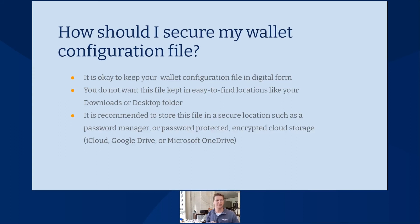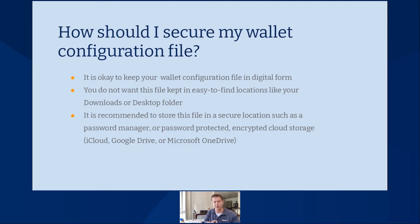Now that you have it downloaded, the last thing we want to highlight is how you should secure your wallet configuration file. First and foremost, it is okay to keep your wallet configuration file in digital form — we do allow you to download it from the Unchained platform. Low-hanging fruit: you don't want it kept in an easy-to-find file location like your downloads or your desktop folder. It is recommended that you store this file in a secure location, like a password manager, password-protected cloud, or encrypted cloud storage — your iClouds, Google Drives, Microsoft OneDrives of the world. Have it somewhere that is not just hanging out on your desktop or in your downloads folder, while still keeping it accessible to you.